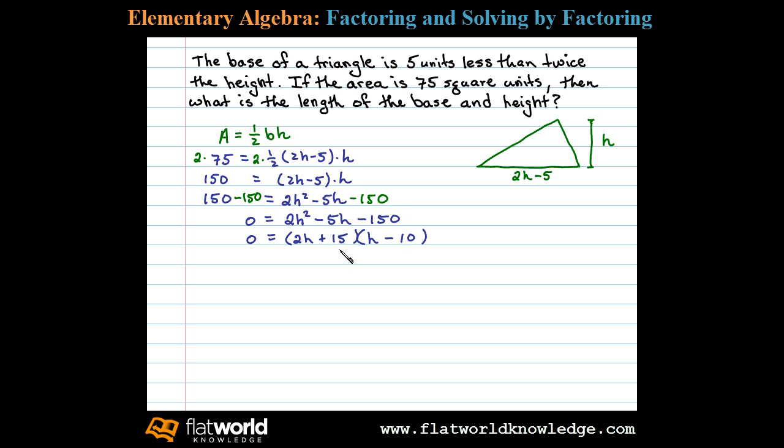Now, remember, the middle term is gotten from the sum of the inner and outer products. The outer product here is negative 20h, and the inner product is 15h. Negative 20h plus 15h is negative 5h. This is factored correctly.